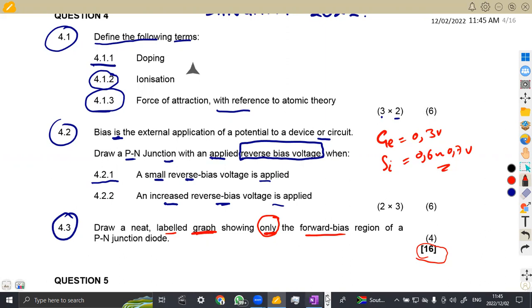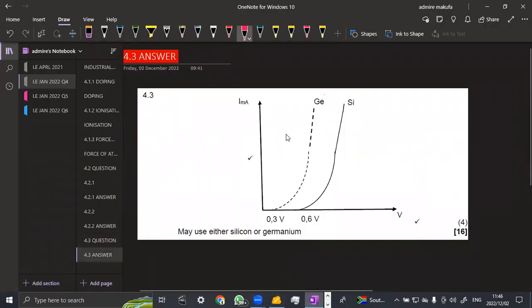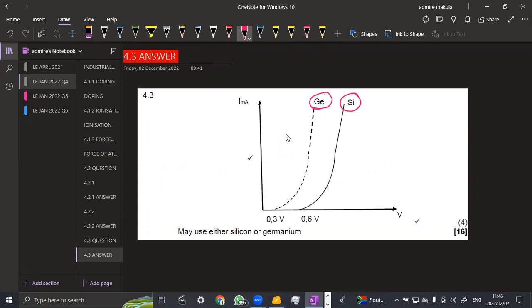Let me just show you how it is going to look like. This is what we have. Like I was saying, we are going to have two things here. We can have germanium and silicon. Silicon at 0.6 volts and germanium starting at 0.3 volts. And also take note to label the voltage axis and also the current axis. That is for you to obtain full marks, to make a total of 16 marks from this question 4 of January 2022 industrial electronics.